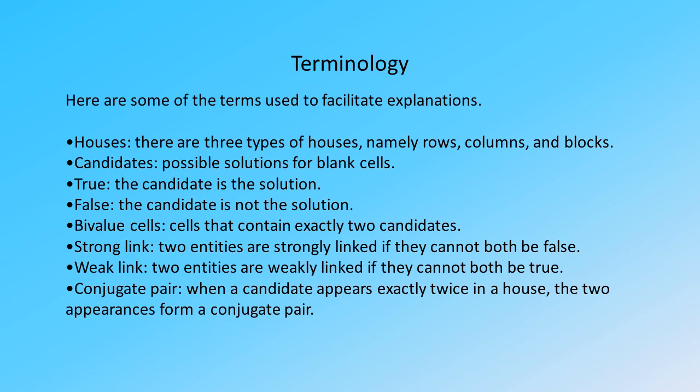Candidates: possible solutions for blank cells. True — the candidate is the solution. False — the candidate is not the solution. Bivalue cells: cells that contain exactly two candidates.